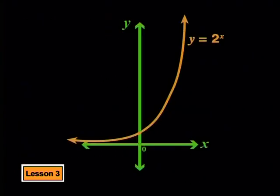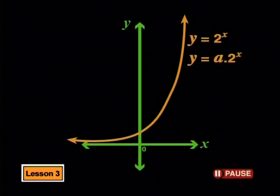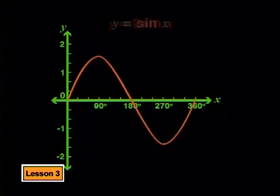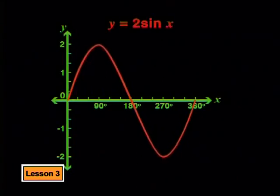Here is the parent graph y equals 2 to the power of x. In this series, we have seen the effect of the a value on other graphs. Can you make a conjecture about the effect of a on this graph? When we changed the parent graph of y equals sin x to get y equals 2 sin x, the graph was stretched vertically away from the x-axis. So we should find that the a value stretches the parent graph away from the x-axis by a factor of a, or pulls it toward the x-axis by a factor of a.